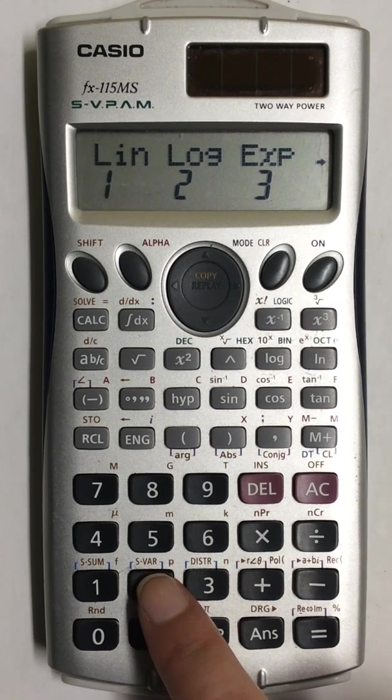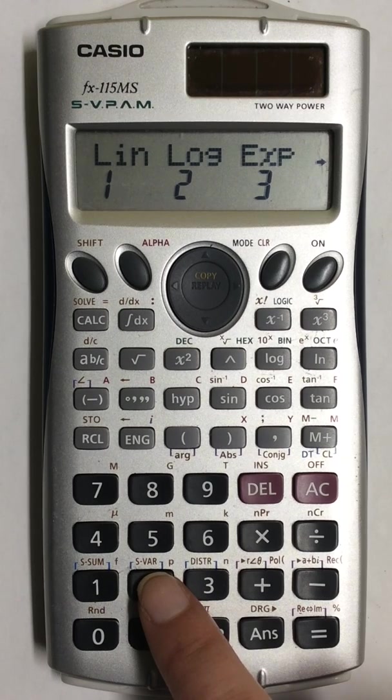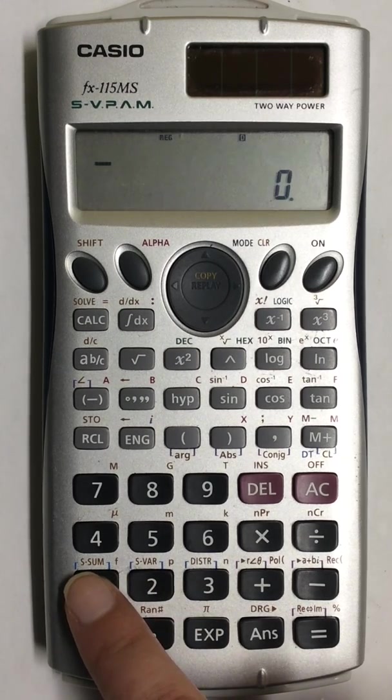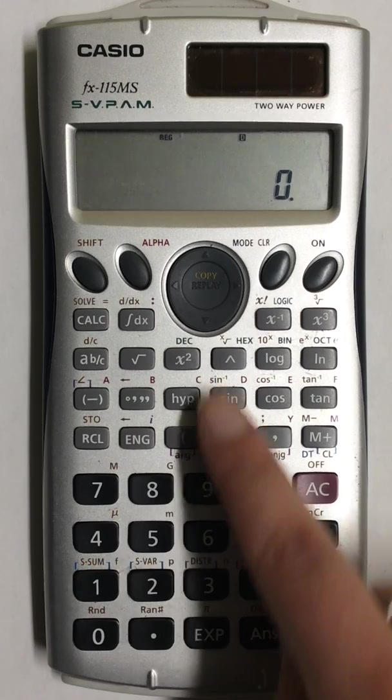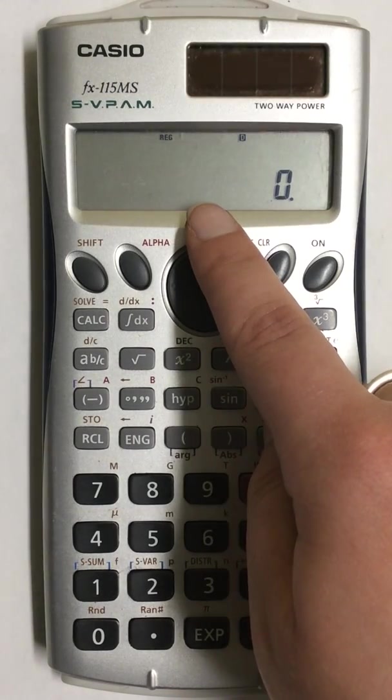When the next three options come up on the screen, I'm going to choose option 1 LIN. REG should now show at the top of your screen.